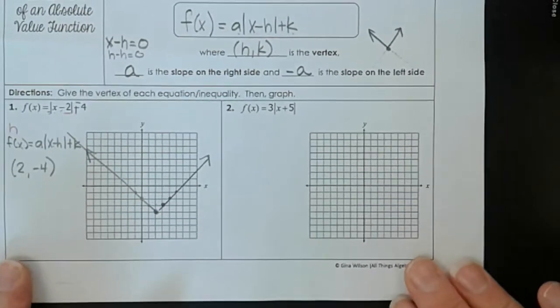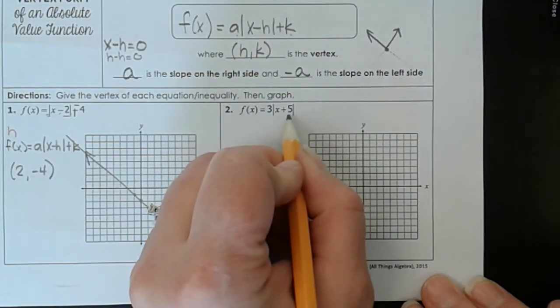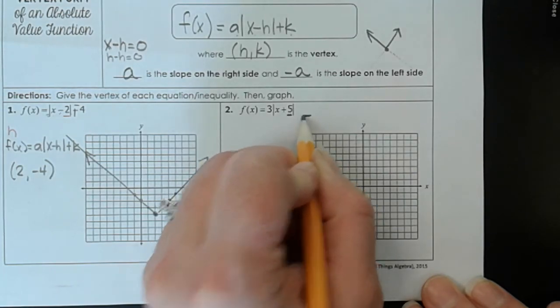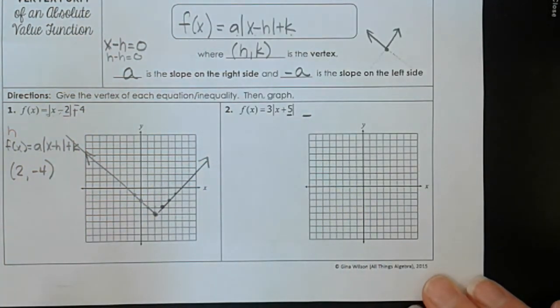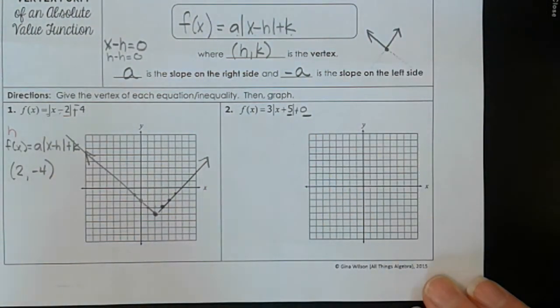All right, let's take a look at this one. This one has a vertex of h, k again. Well here's h, and here's k. Oh wait, there's nothing there for k. Well if there's nothing, that would mean a 0. Because plus 0 is the same as that invisible area.